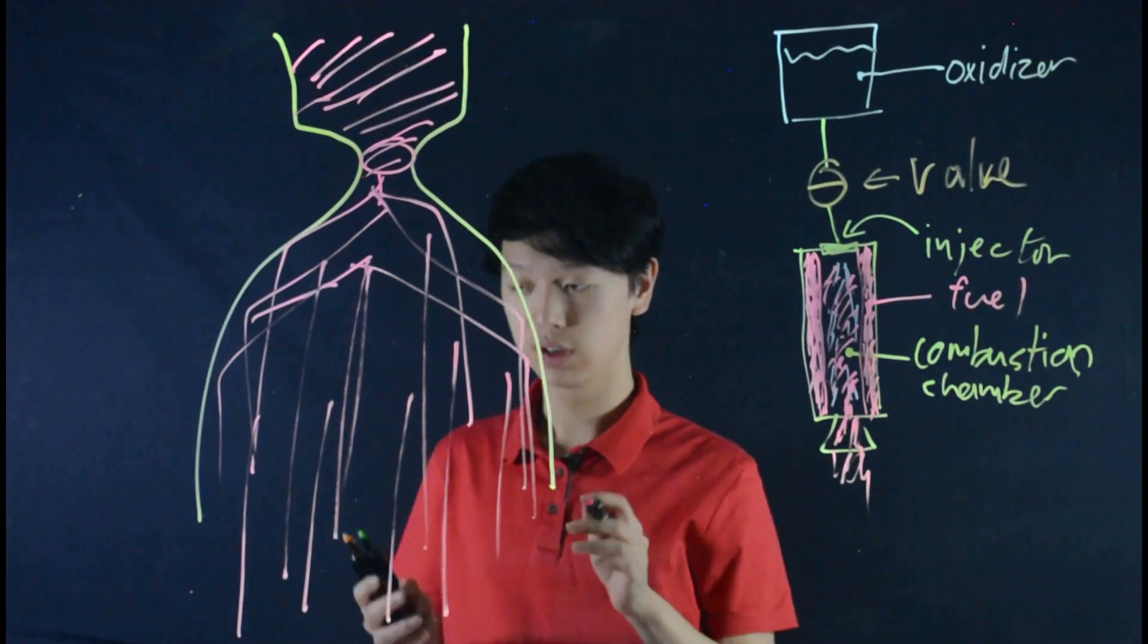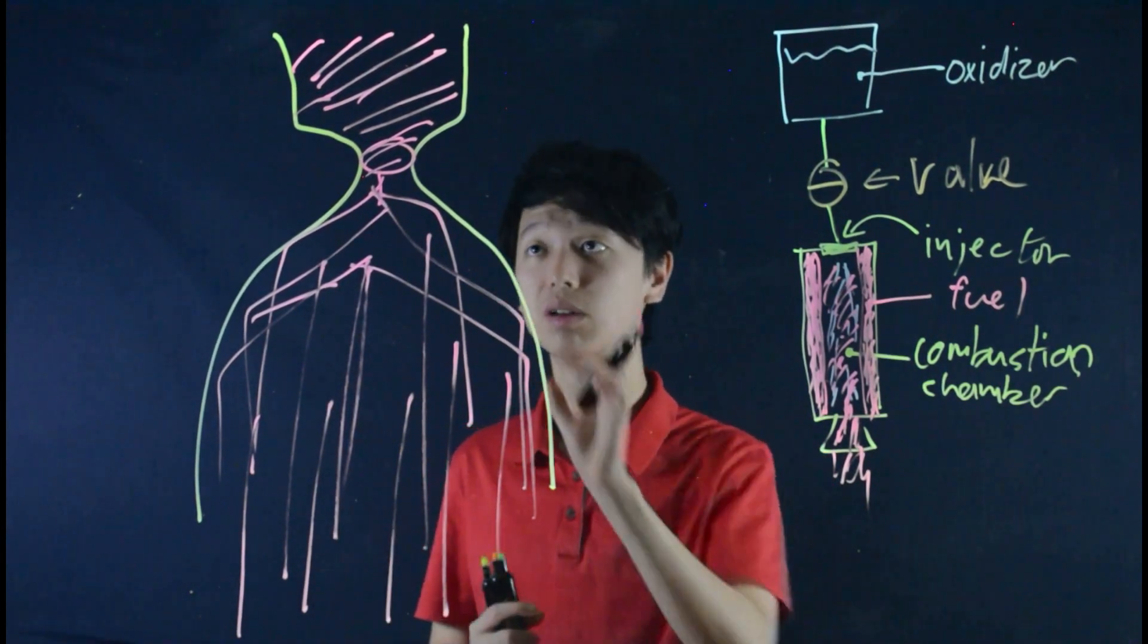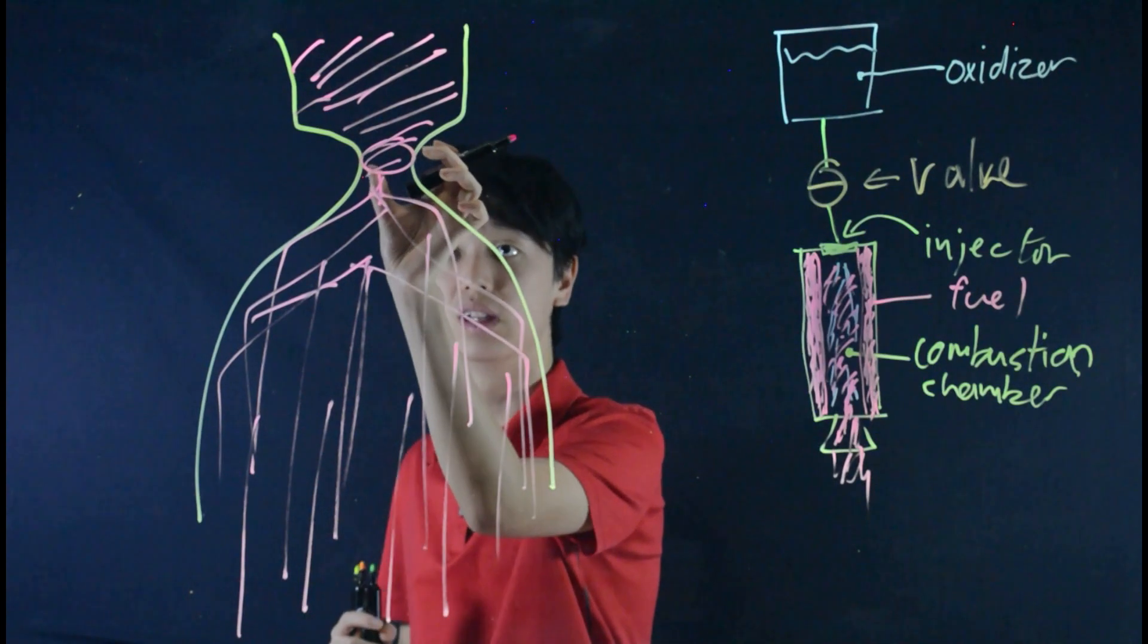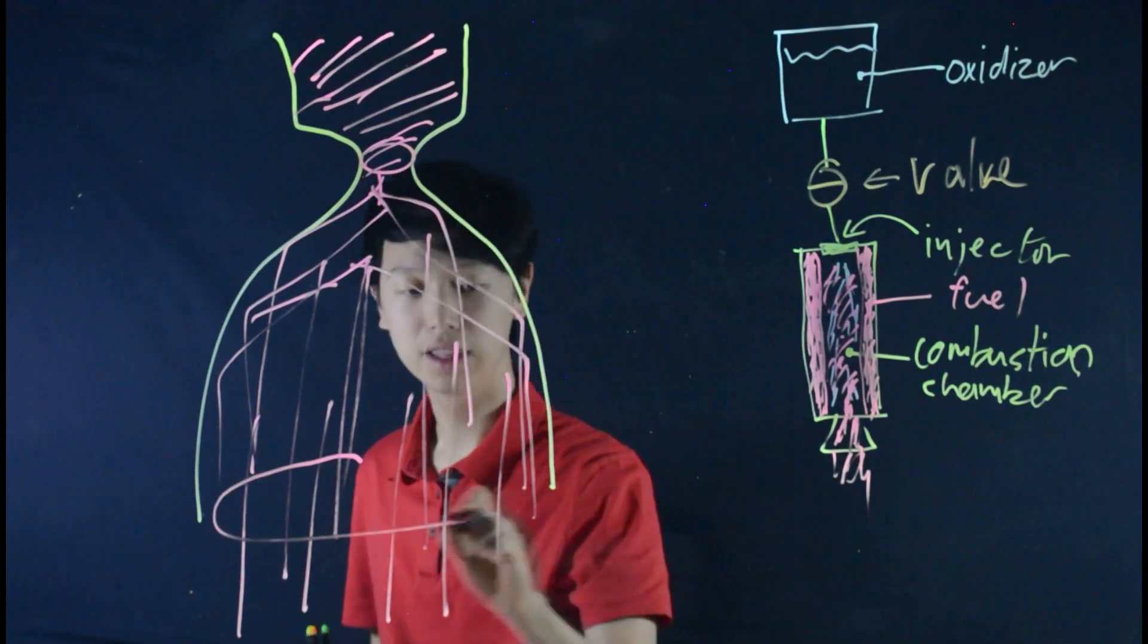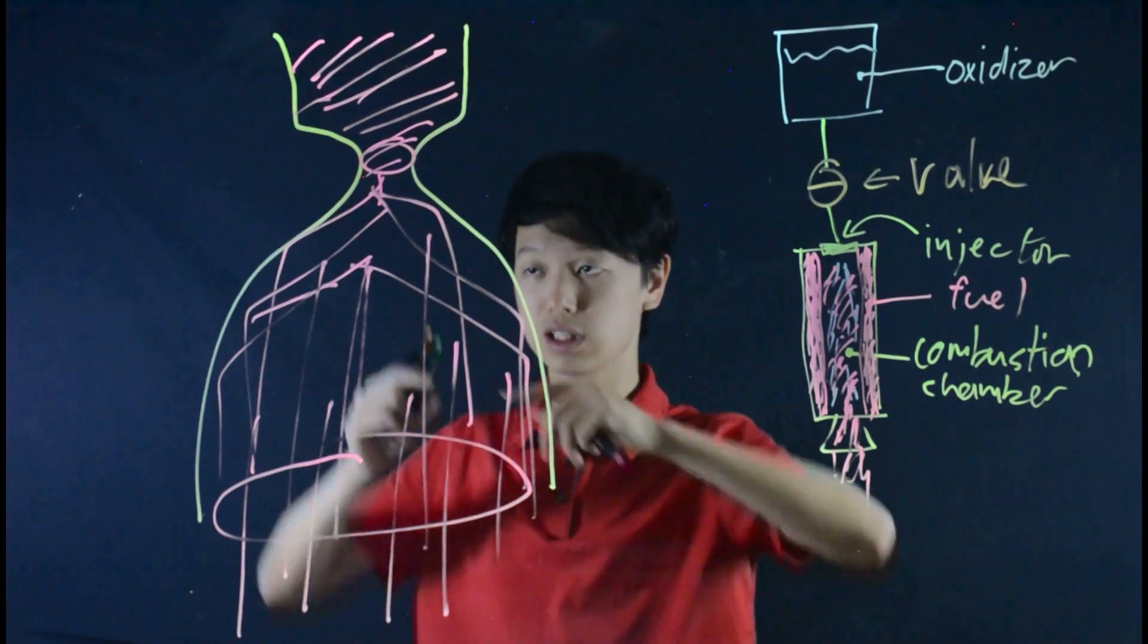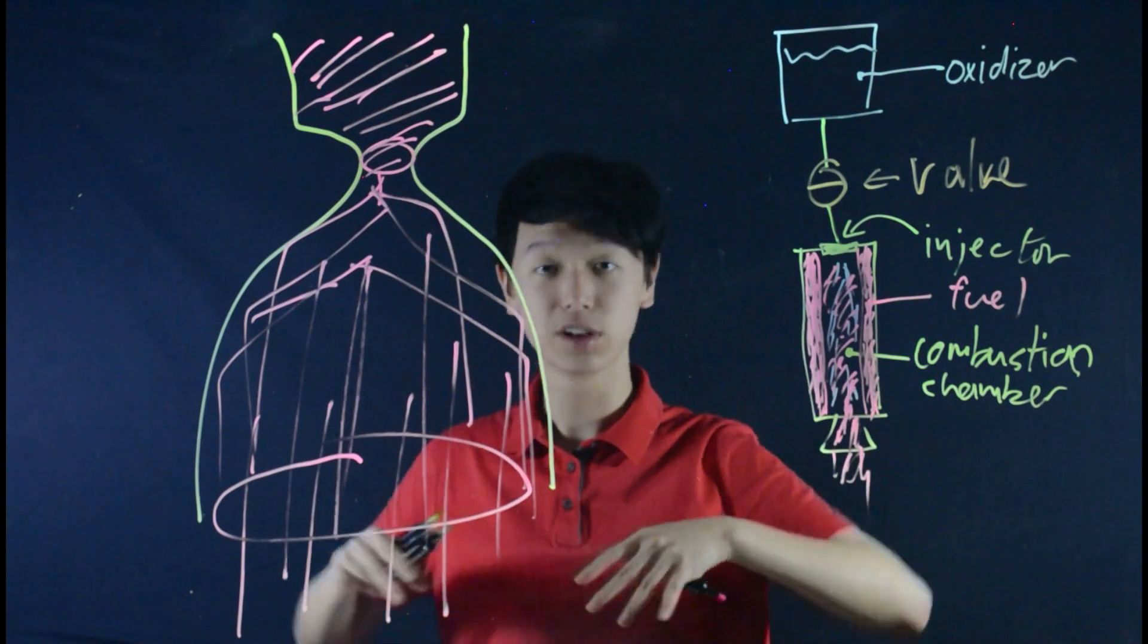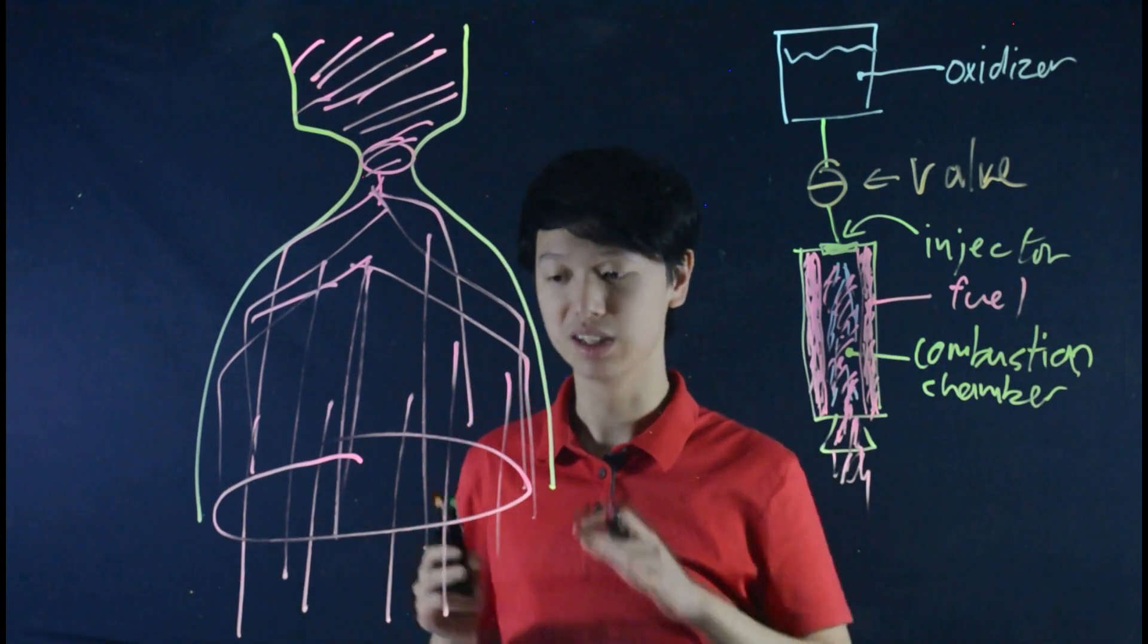However, for a nozzle to convert most of that pressure, it needs to have a high expansion ratio, which is the ratio between the throat here and the nozzle exit. When you have this high expansion ratio, there is space for this high pressure gas to open up and convert much of its pressure into kinetic energy.